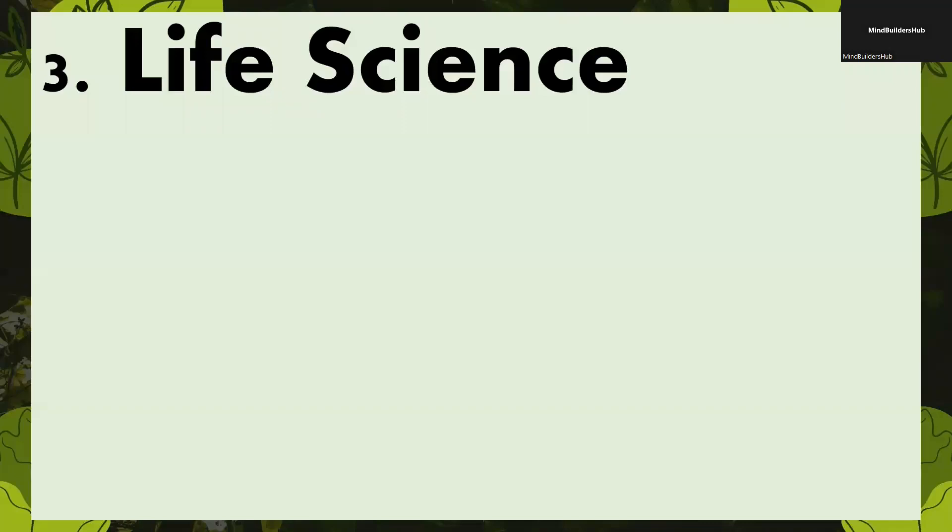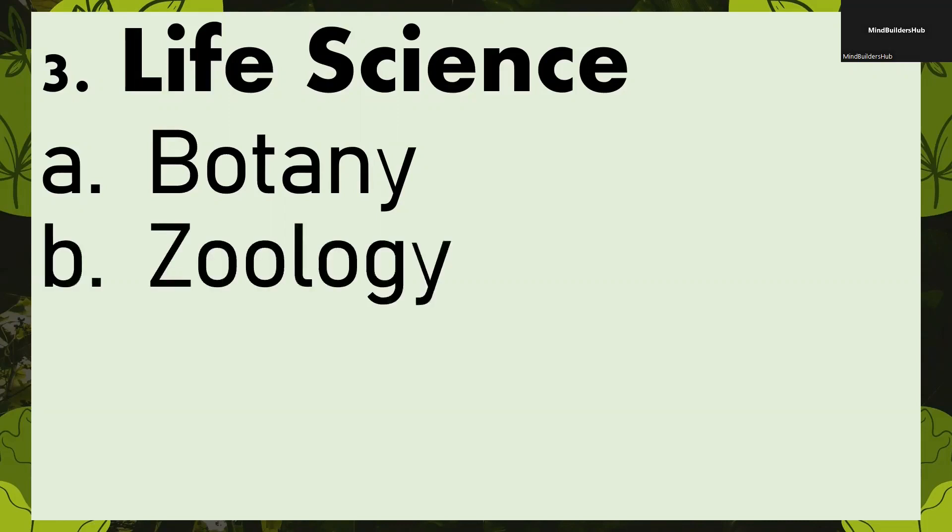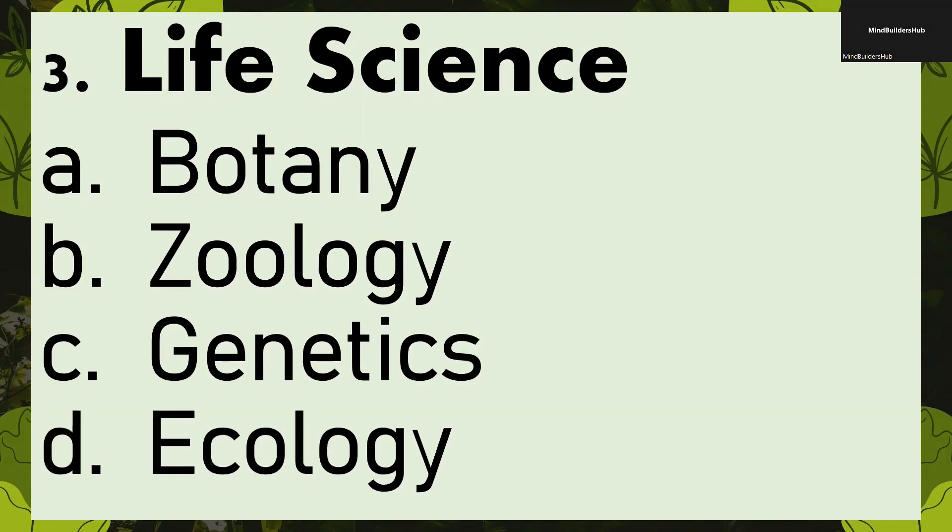And lastly, we have the life science or also known as biology. And under this, the study of plants, which is botany, the study of animals, different kinds of animals, which is called zoology, genetics, and ecology. Genetics deals with the heredity and characteristics of living things. Ecology, focusing on the living things or interaction between living things and non-living things.